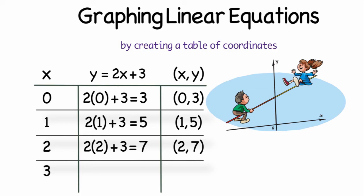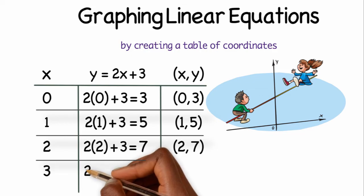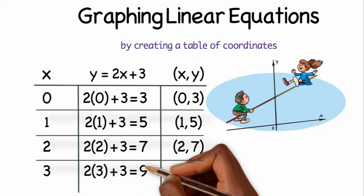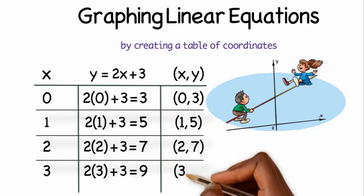The final x value that I chose was 3. So 2 times 3 is 6. 6 plus 3 is 9. So (3, 9) will be the fourth coordinate that I will graph.